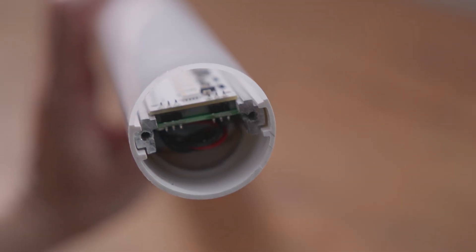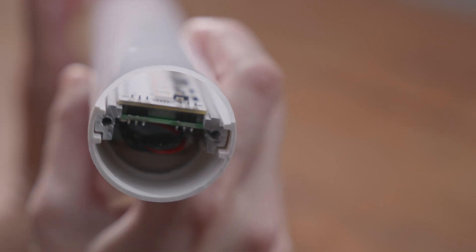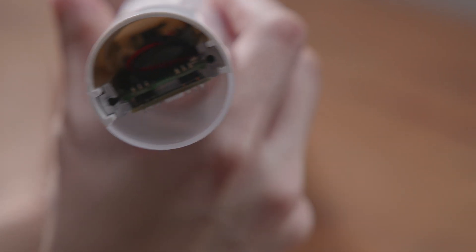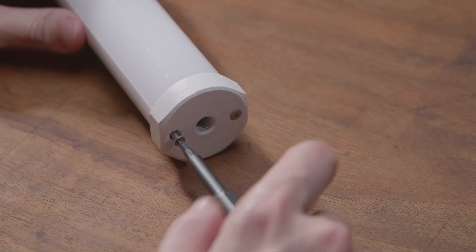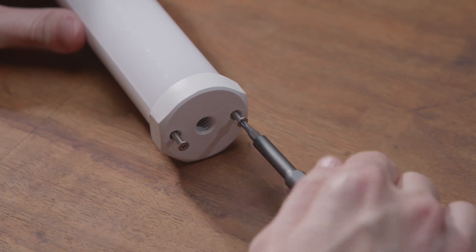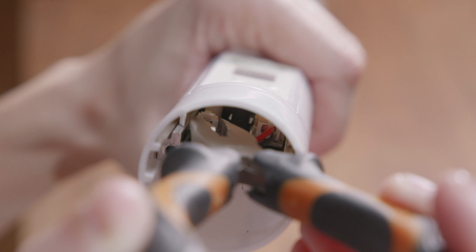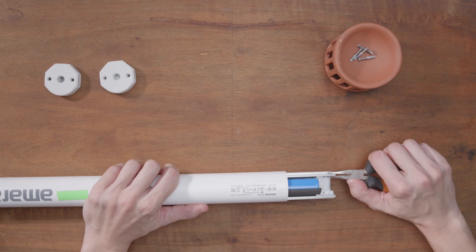Take the cap off and inside we see the control board and two connectors. One for power and one for DMX. Unscrew the other side as well. Then gently pull the connectors out and slide out the aluminum chassis.